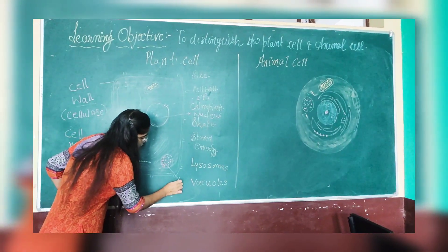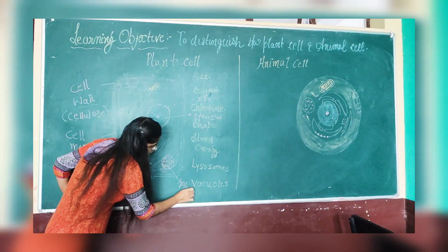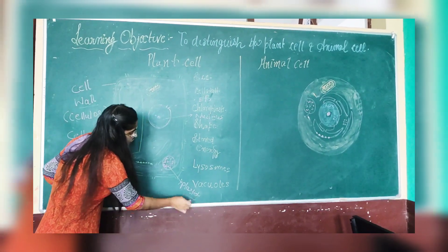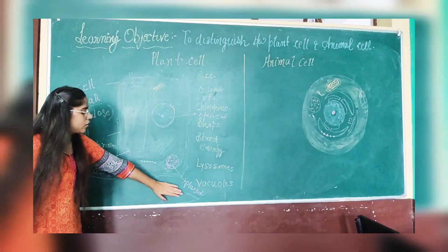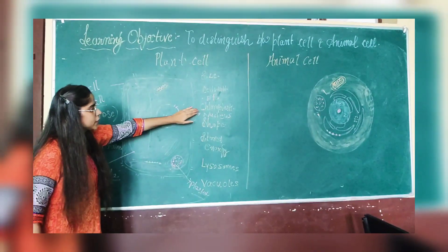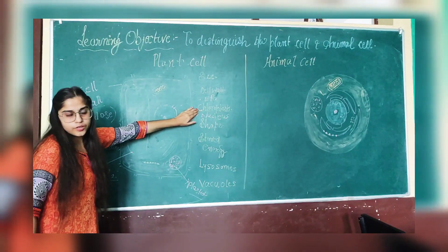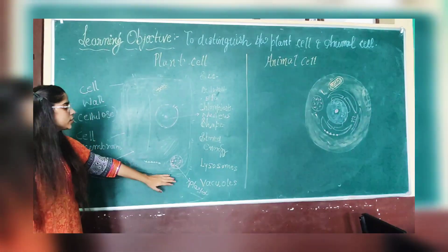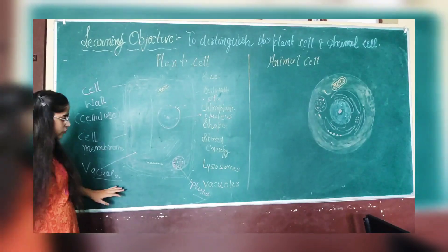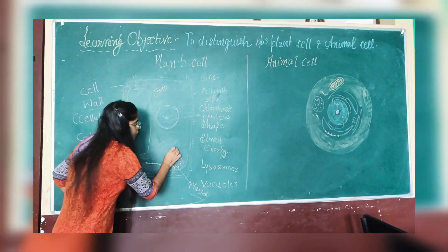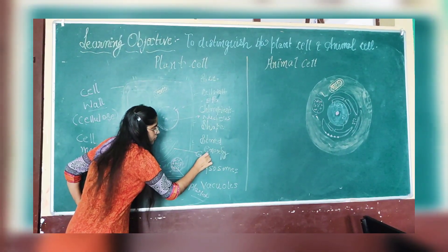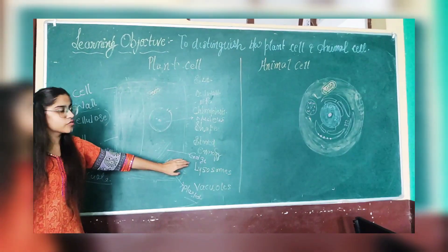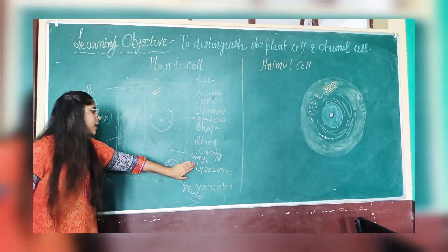These are the plastids present inside the plant cell. Chloroplast is a special type of plastid which is present inside the plant cell and it helps the cell in photosynthesis.